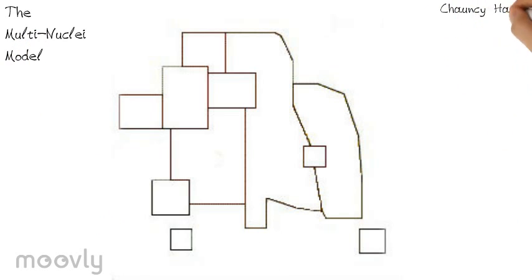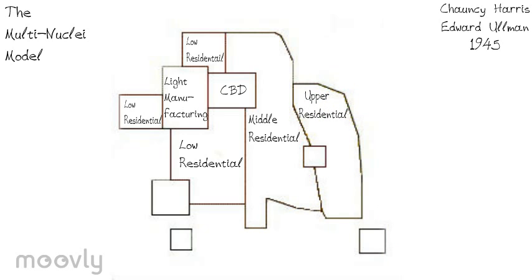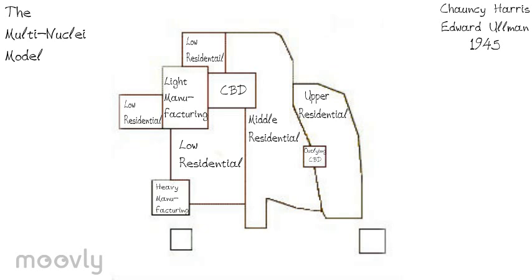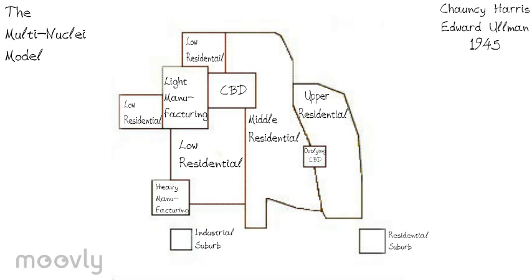The multi-nuclear model was made in 1945 by Chauncey Harris and Edward Ullman. They said that the CBD was losing its importance in relation to the rest of the city and should be seen as a nucleus rather than the focal point. The different zones develop into independent areas based off of their activities, and each were near zones that they were compatible with. The zones included the CBD at the center; light manufacturing to the left side of the CBD; the low class residential above and below the light manufacturing and CBD; the middle class residential to the right of the CBD; the upper class residential to the right of the middle class zone; heavy manufacturing at the bottom of the lower class residential; the outlying business district between the middle and upper class residential, usually a mall; the residential suburb below the upper class residential containing upper middle class; and the industrial suburb near the heavy manufacturing zone containing lower class factory workers.